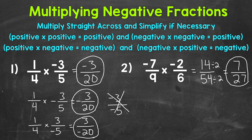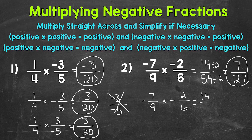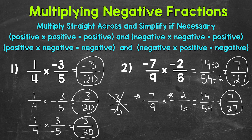I'll also write this out a different way with the negative signs out in front. Same process: seven times two is 14, and nine times six is 54. We notice we have a negative times a negative, so we get a positive result — positive 14 54ths, which simplifies to 7 27ths. We get the same answer either way. Keep in mind that negative fractions can be written a little differently, but they all mean the same thing, as long as the negative is not in both the numerator and denominator.